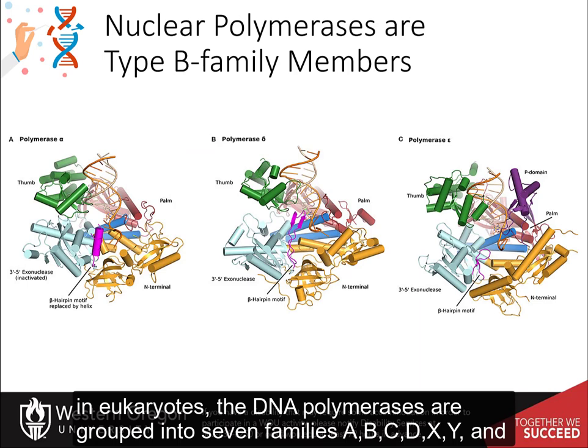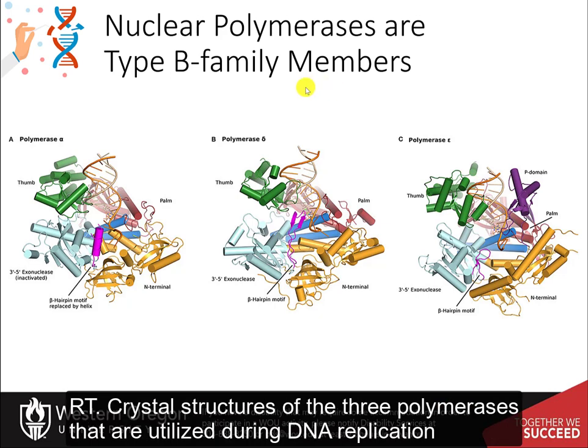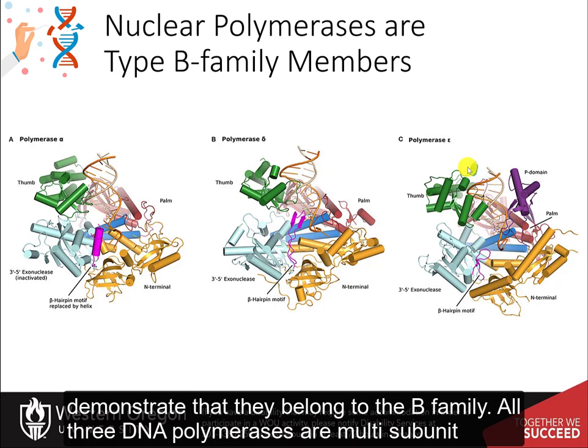In eukaryotes, the DNA polymerases are grouped into seven families: A, B, C, D, X, Y, and RT. Crystal structures of the three polymerases utilized during DNA replication demonstrate that they belong to the B family.